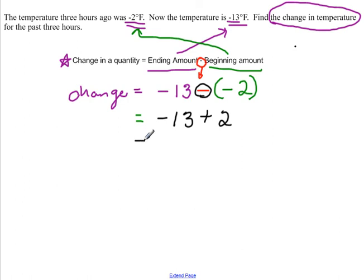And negative 13 plus 2 - the signs are different. So we take the difference and keep the sign of the 13, because that's the one with the larger absolute value. So my answer is going to be negative. Negative 11, when we take the difference of 13 and 2.